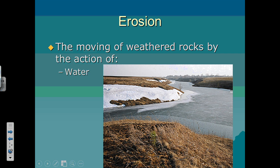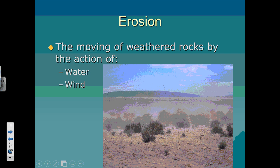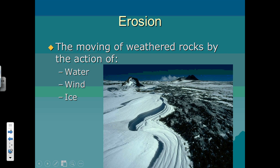Erosion, very simply, is pieces of rock — in this case we refer to them as sediments — being moved. There are a lot of different ways they can be moved. They can move by the ocean, rivers, streams, they can be moved in lakes, and they can be moved by wind.